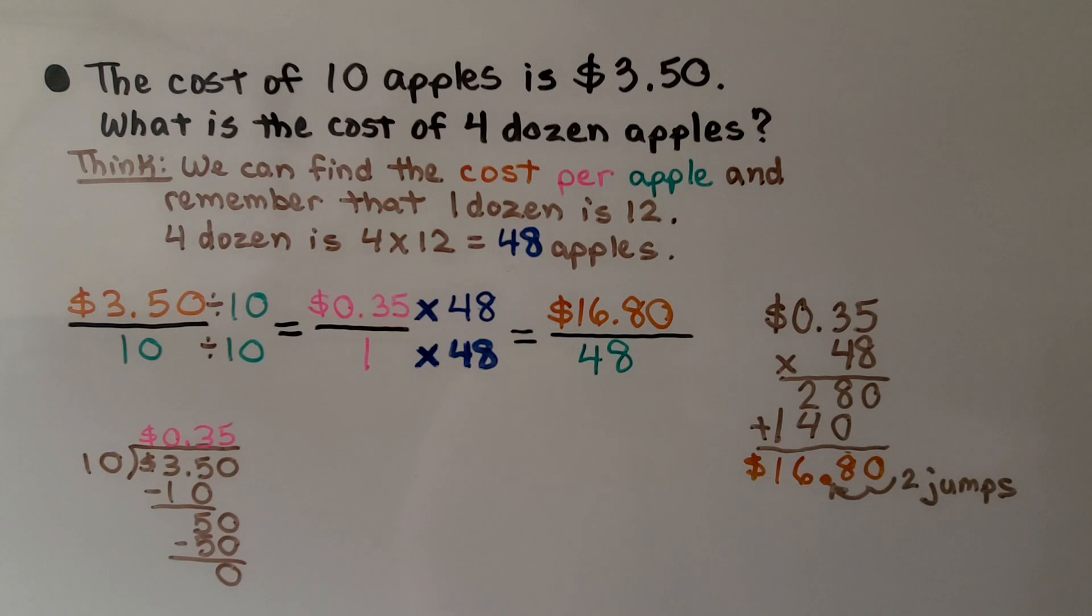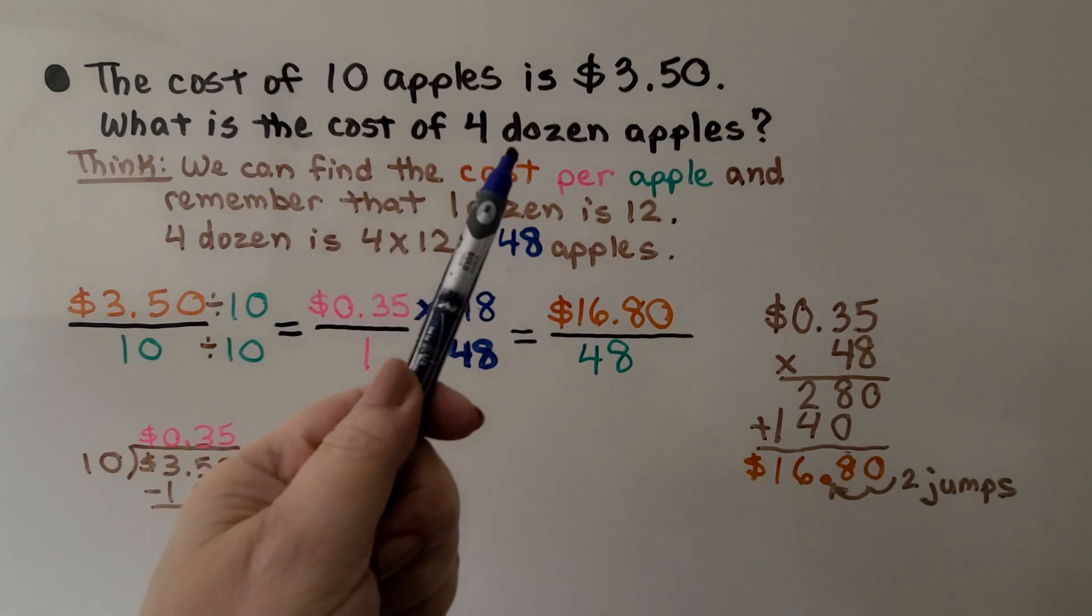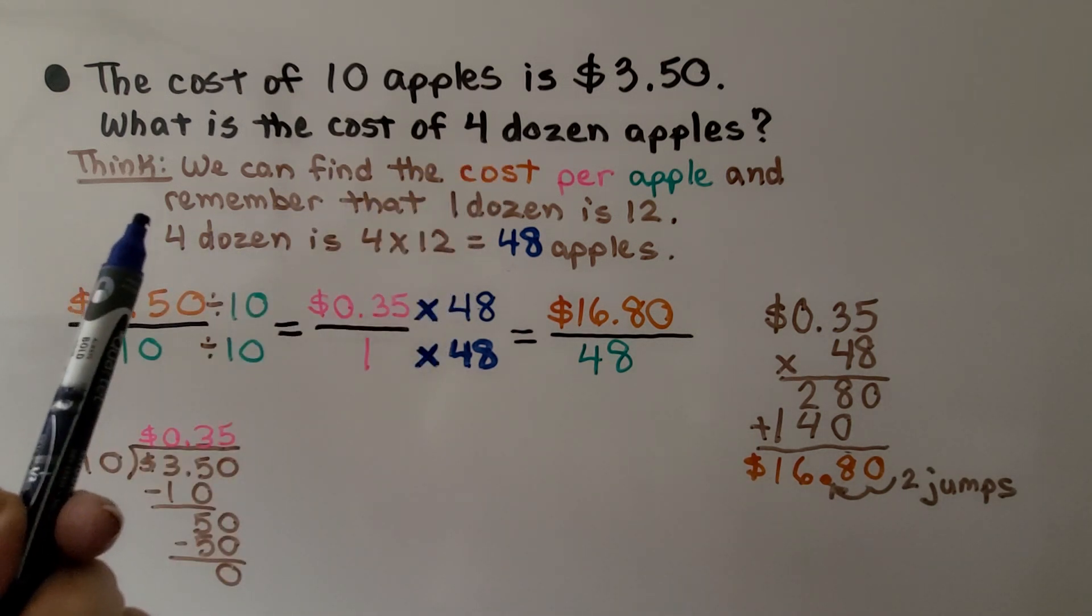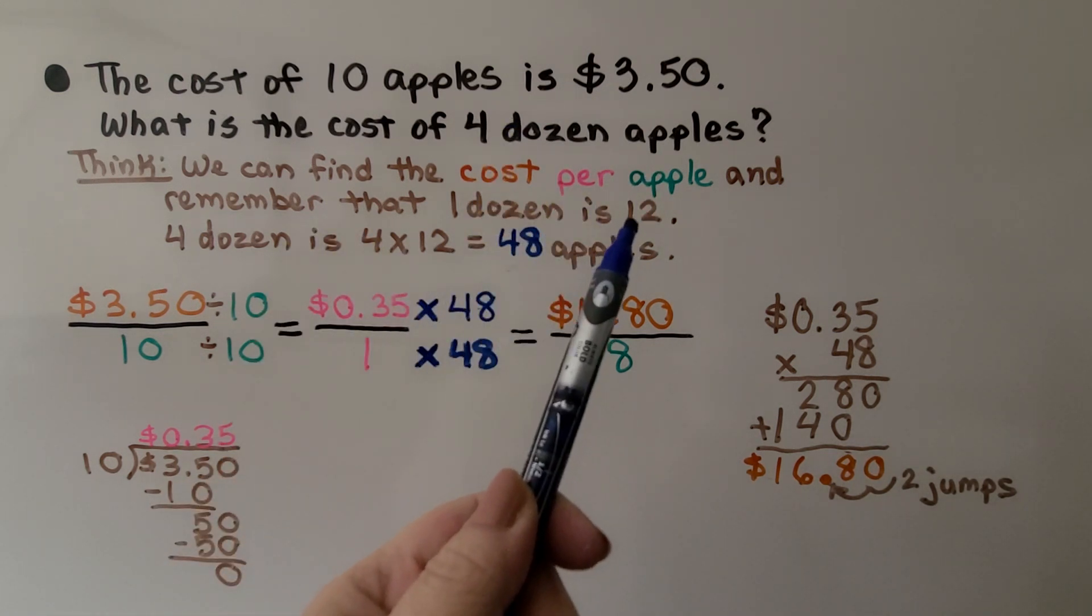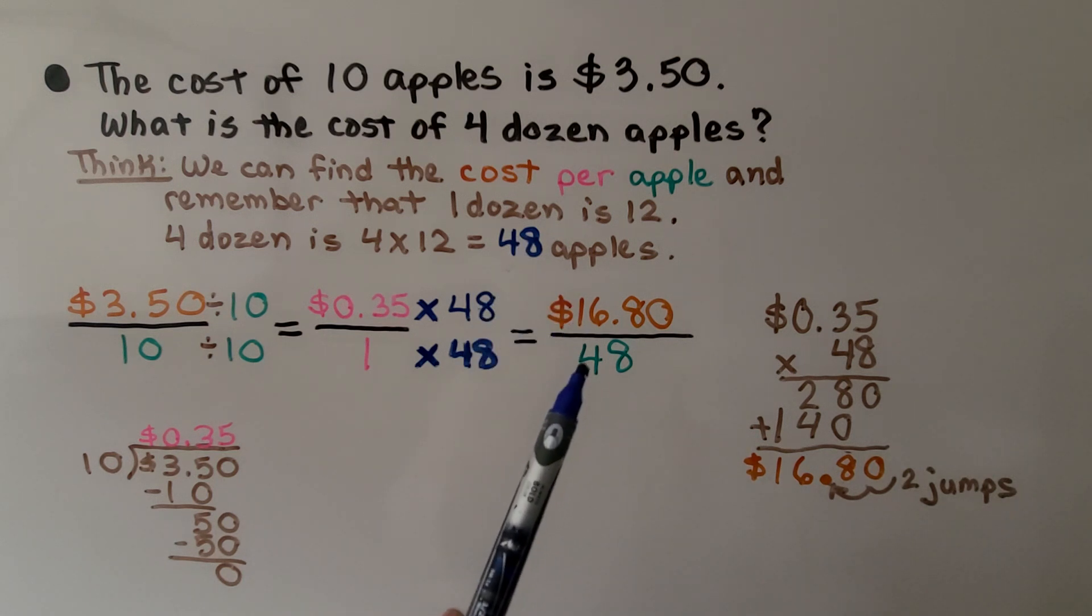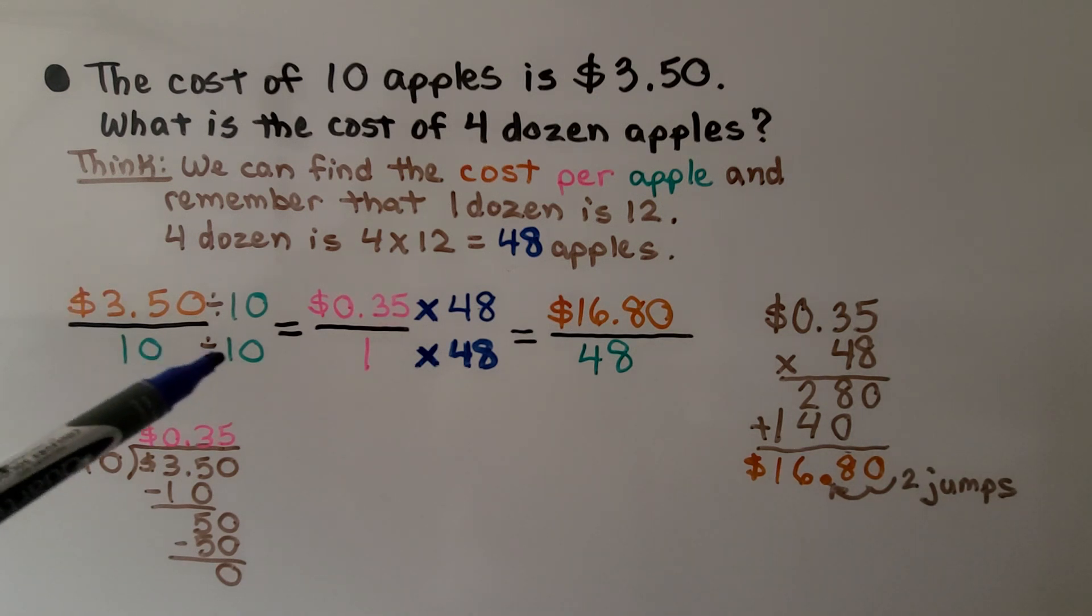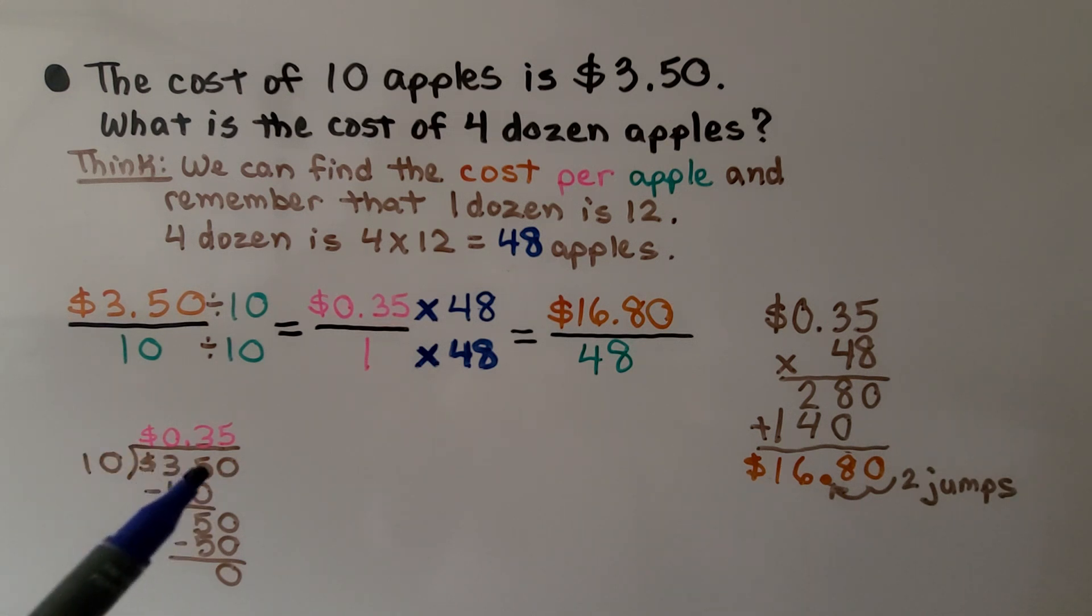This one's about apples. The cost of 10 apples is $3.50. What is the cost of four dozen apples? We can find the cost per apple. Remember that one dozen is 12. That means four dozen is four times 12, so we're looking for 48 apples as our denominator. We do cost per apple of $3.50 for 10. We're going to divide by 10. We can do division on the side. 10 fits into $3.50.